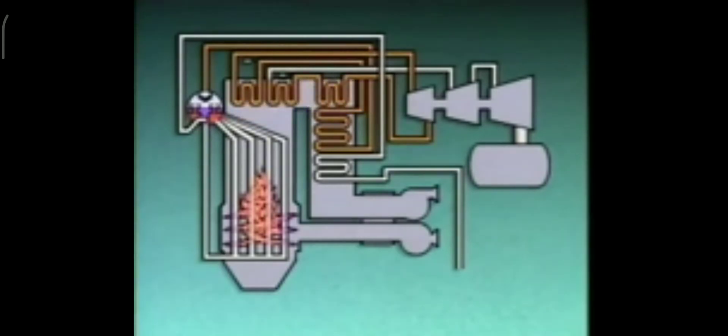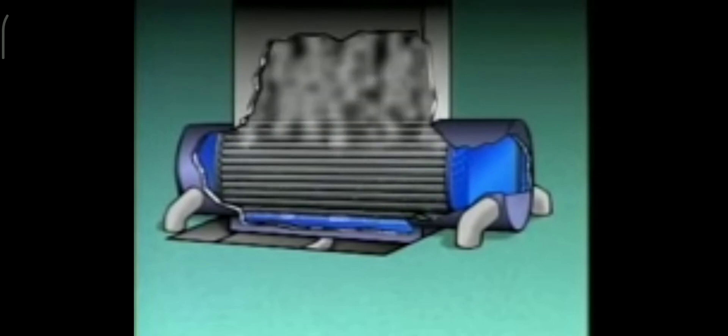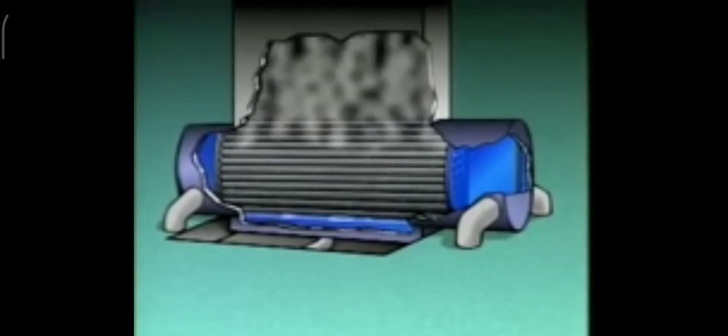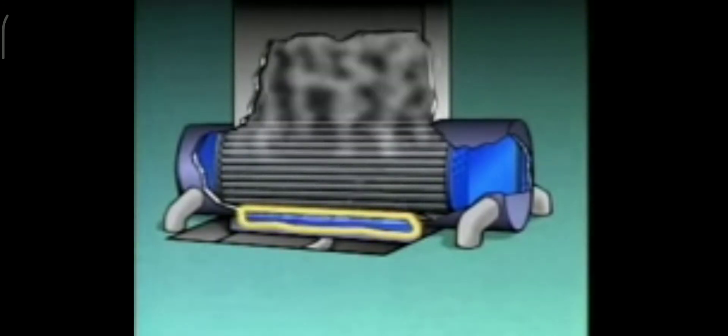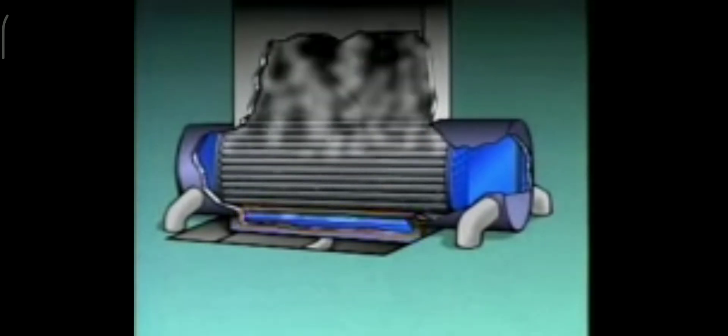After it is reheated, the steam flows to the intermediate pressure, or IP, section of the turbine, and then through the low pressure, or LP, section. From the low pressure section, the spent steam flows into the condenser. Inside the condenser, the steam flows over tubes that contain cooling water. The water in the tubes absorbs heat from the steam, and the steam condenses back into water. The water is collected in the bottom of the condenser and pumped back to the boiler to begin the cycle again.